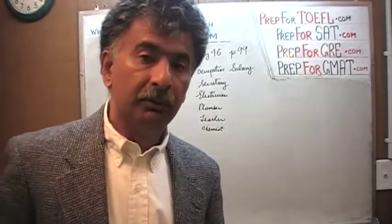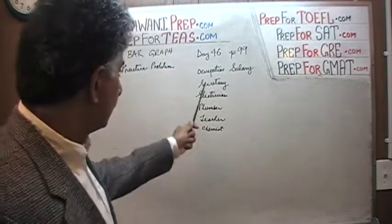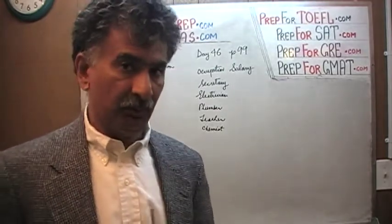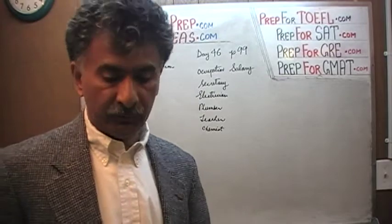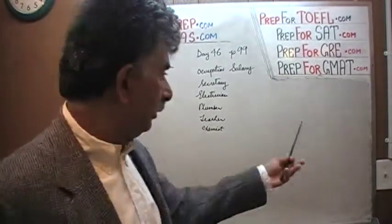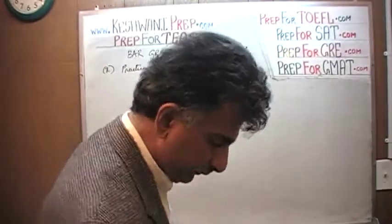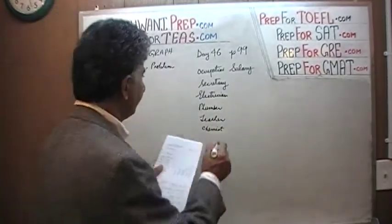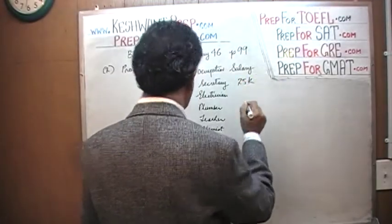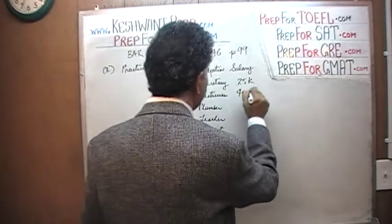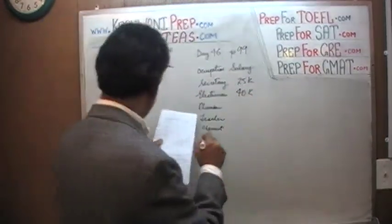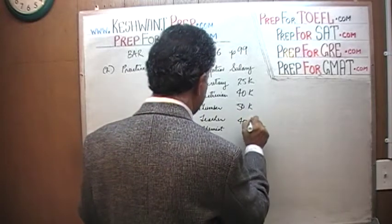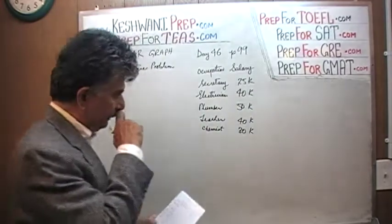They give us the bar graph. We are going to do it a little bit in reverse order — we are going to start with the raw data and then draw the bar graph ourselves, and then it is asking us to draw three conclusions. We are going to make up three problems and answer those questions. So first we need the raw data. These are the salaries given to us for different professions: the secretary makes $25,000, an electrician makes $40,000, a plumber makes $50,000, a teacher makes $40,000, and finally a chemist makes $80,000.